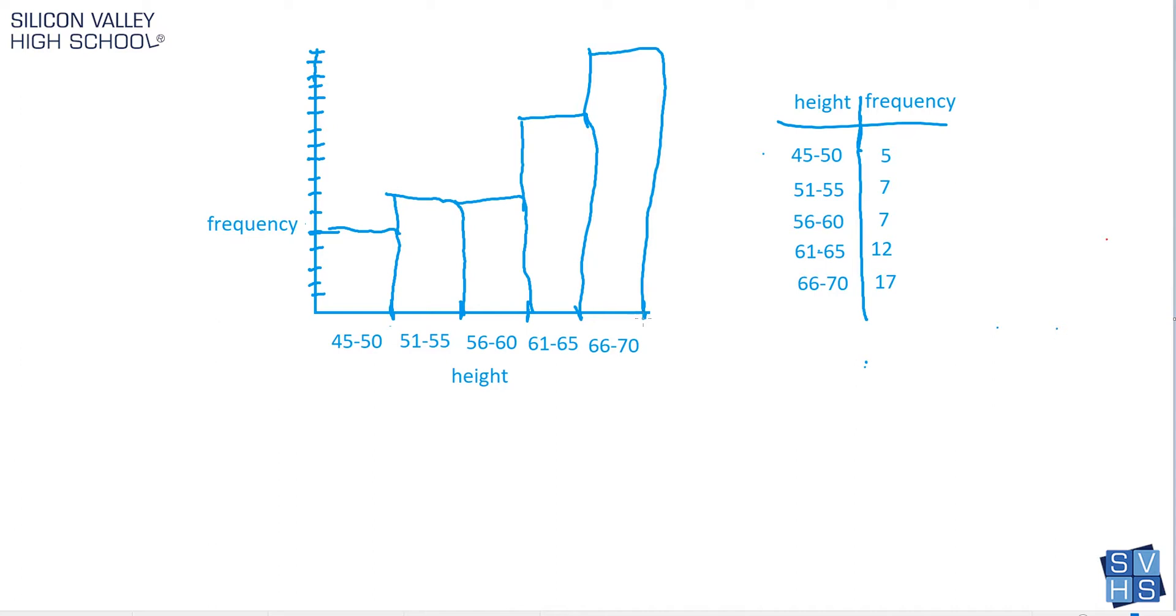And that's why histograms even were invented, was to tell you the frequency of something happening. This could be GPA down here, and how often do you find people within these ranges of GPA. And the key is these are not specific points, these are ranges.